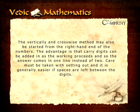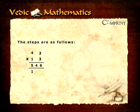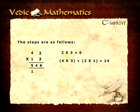The vertically and crosswise method may also be started from the right hand end of the numbers. The advantage is that carry digits can be added in as the working proceeds and so the answer comes in one line instead of two. Care must be taken with setting out and it is generally easier if spaces are left between the digits. The steps are as follows: 2 multiplied by 3 equals 6, 4 multiplied by 3 added to 2 multiplied by 1 equals 14, and 4 multiplied by 1 plus 1 equals 5.